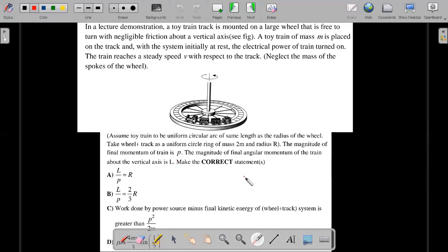Mark the correct statements according to the given information. So option A is asking the magnitude of L by P ratio and the same with B. You have to mark which one is correct or which one is not. And work done by the power source which drives the train minus the final kinetic energy of the wheel plus track system is greater than E square divided by 2m where M is the mass of the train. So you have to check whether this is right or wrong. And the last one, the magnitude of P is 4mV divided by 3 into sine half.